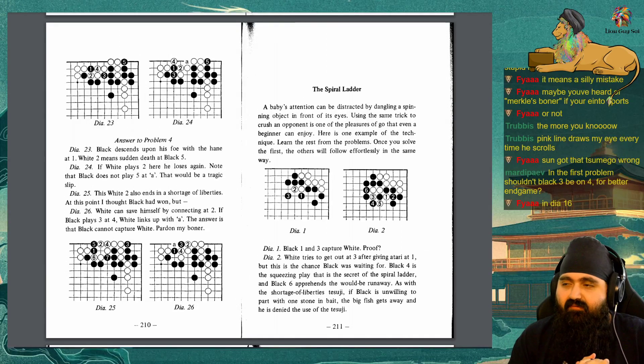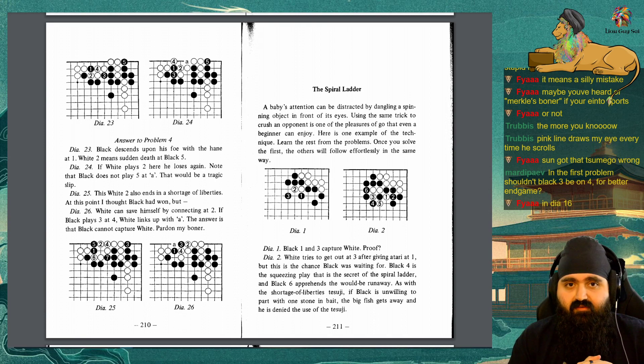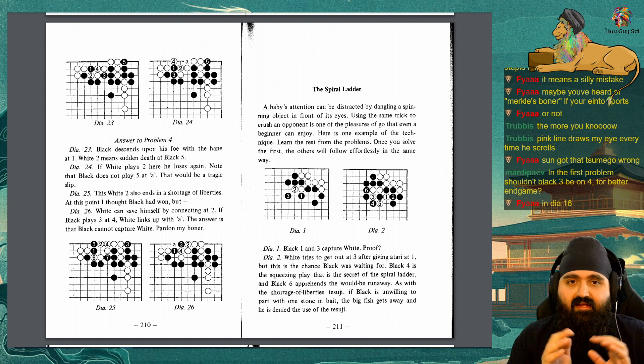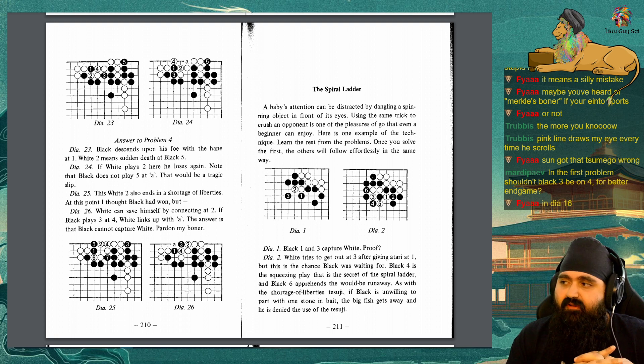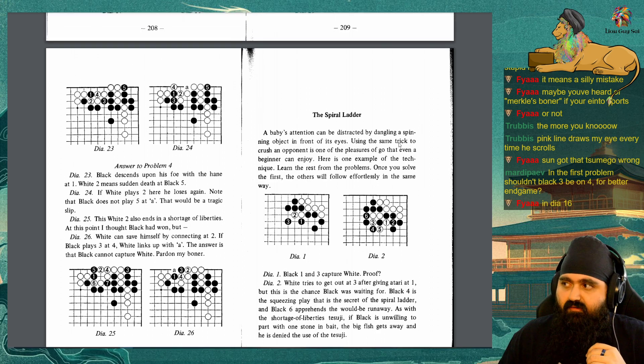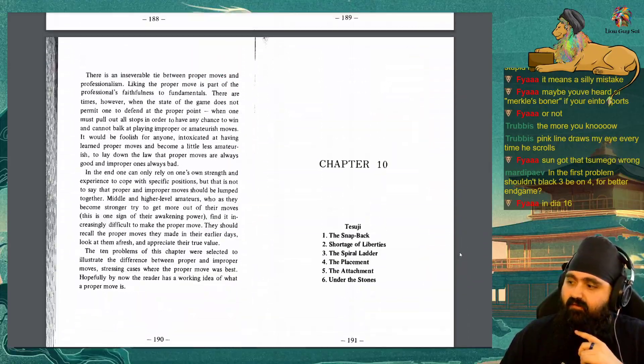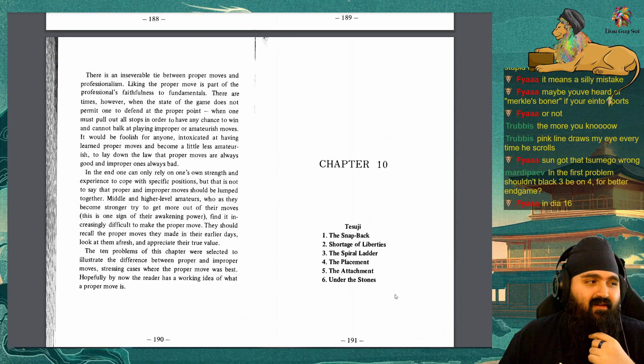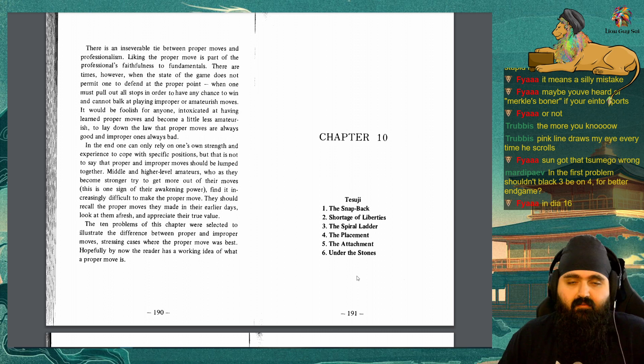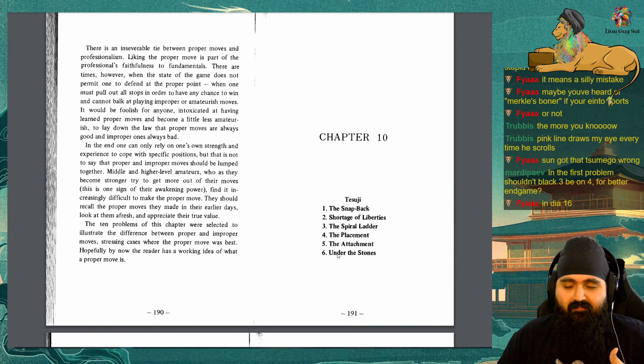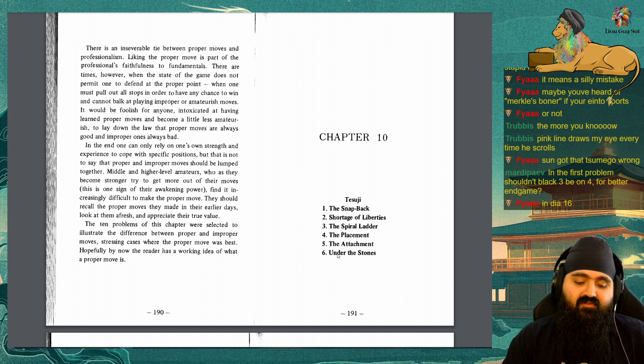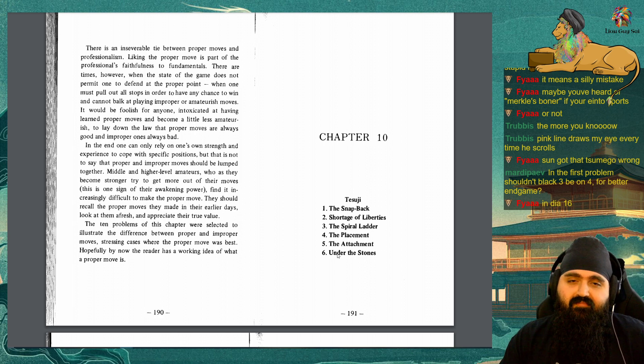And there we have it YouTube. We've covered the first 2 tesuji: the snapback and the shortage of liberties. There are 4 more in this chapter, this very long chapter, chapter 10. But I've decided to space them out because it's a lot of reading, both out loud and on the Go board. So next week we will cover the next 2 tesuji, which are the spiral ladder and the placement. It'd be awesome to catch you all live, joining chat. Next week we'll be on the spiral ladder and the placement. And yeah, if you want to check us out live, catch us at twitch.tv/lyingguyssi. But yeah, I will catch you later YouTube.